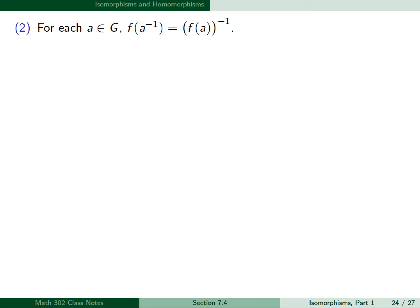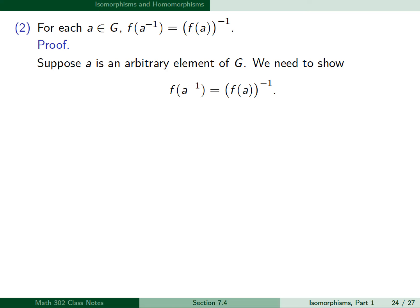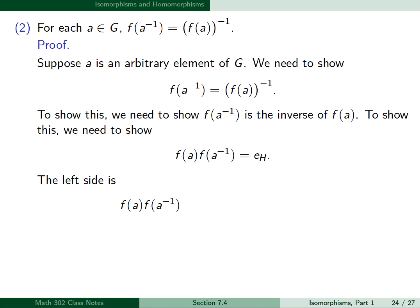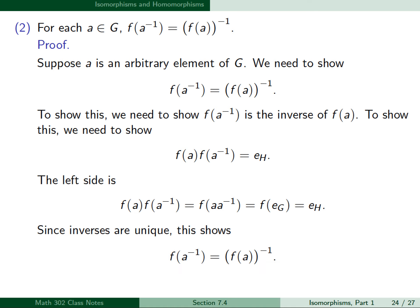For part 2, we want to show f(a⁻¹) = f(a)⁻¹ for each element a in G. We need to show f(a⁻¹) is the inverse of f(a) in H, i.e., f(a) · f(a⁻¹) = e_H. Since f is a homomorphism, f(a) · f(a⁻¹) = f(a ★ a⁻¹) = f(e_G) = e_H. Since inverses are unique, f(a⁻¹) must equal the inverse of f(a). This proves part 2.